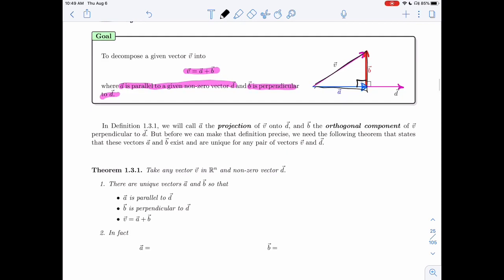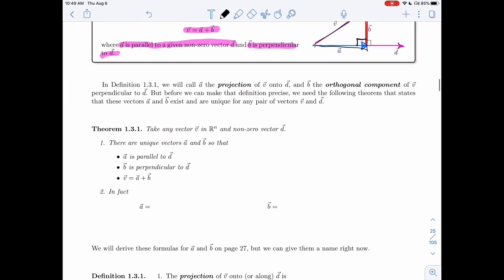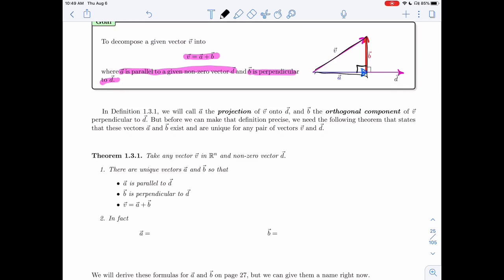So soon, in definition 1.3.1, just further down the page, we'll call A the projection. We'll define it to be the projection of V onto D. And we'll call B the orthogonal component of V perpendicular to D.